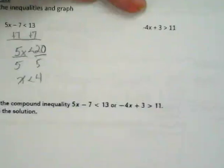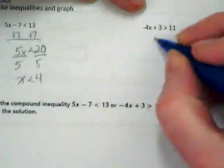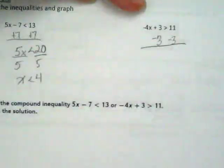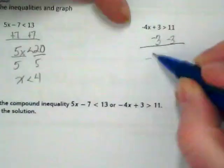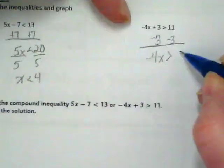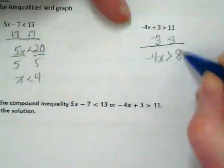For the inequality on the right, I'm going to do a similar action by moving that 3 first. We're combining like terms across the inequality symbol. We get negative 4x is greater than 11 minus 3, which would be 8.